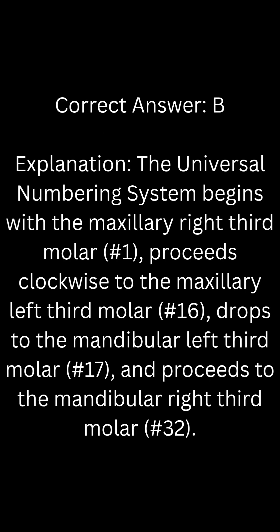Answer: B. Explanation: The universal numbering system begins with the maxillary right third molar as tooth #1, proceeds clockwise to the maxillary left third molar as tooth #16, then drops to the mandibular left third molar as tooth #17, and proceeds to the mandibular right third molar.